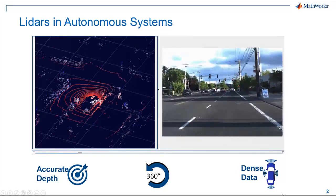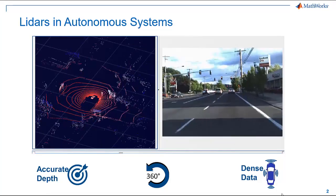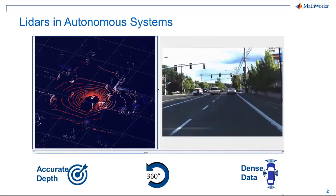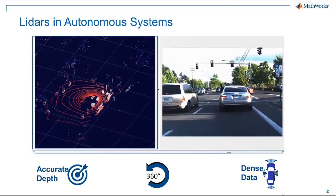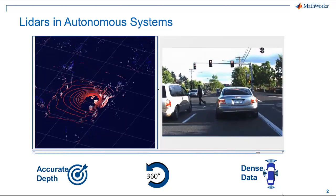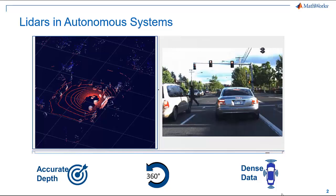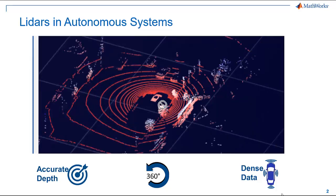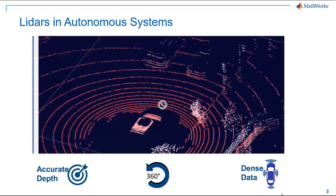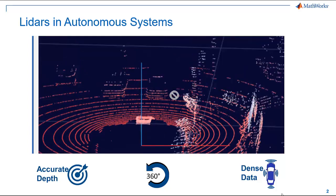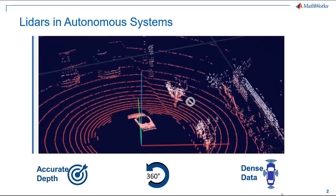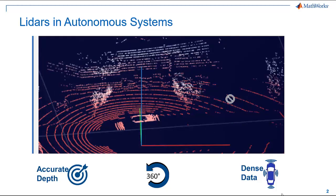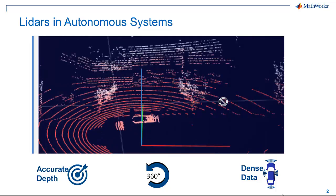LiDARs are now being used in autonomous systems along with other sensors such as cameras and radars for environmental perception. There are three key benefits of using LiDARs in our systems. Firstly, it provides an accurate depth field of the surrounding objects. Secondly, it provides a 360-degree view of our surroundings with just one sensor, while we need multiple calibrated sensors in the case of cameras and radars. Finally, the dense data from LiDAR sensors improves the accuracy when we are using machine learning and deep learning algorithms.